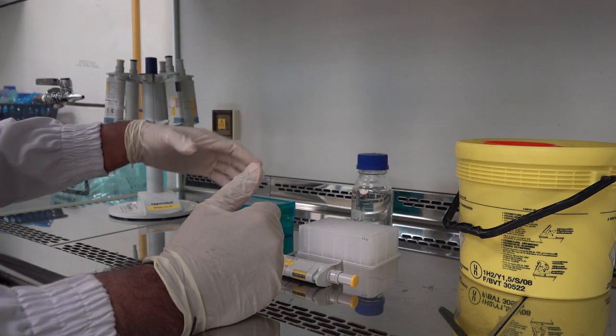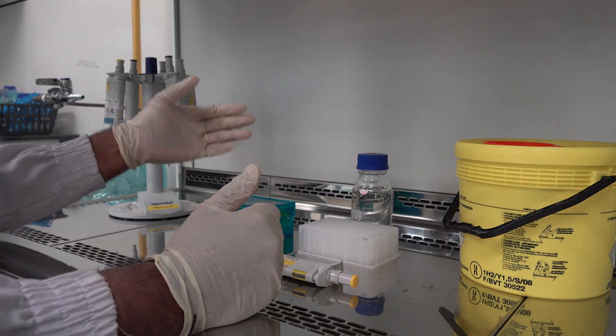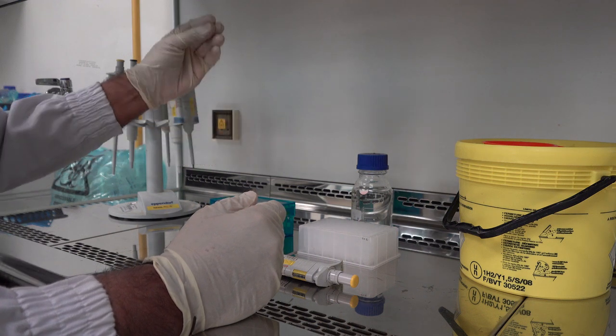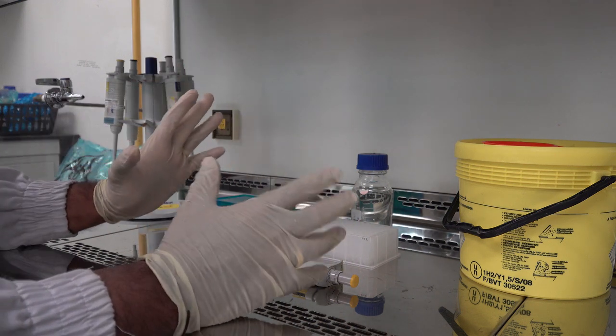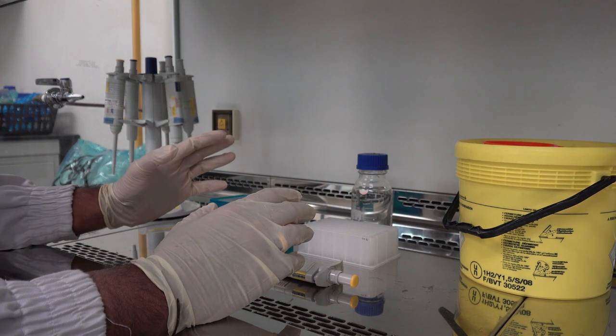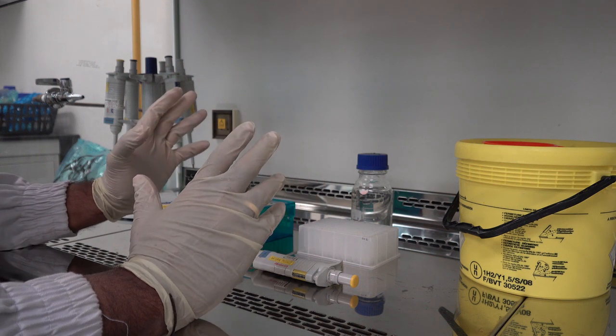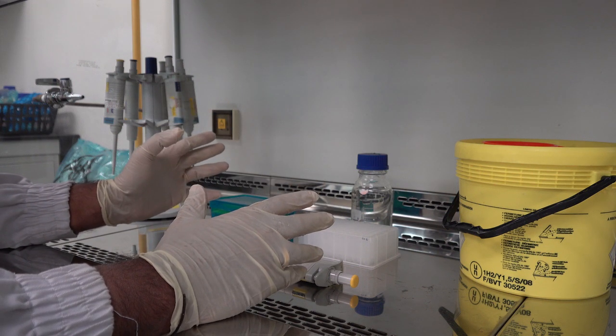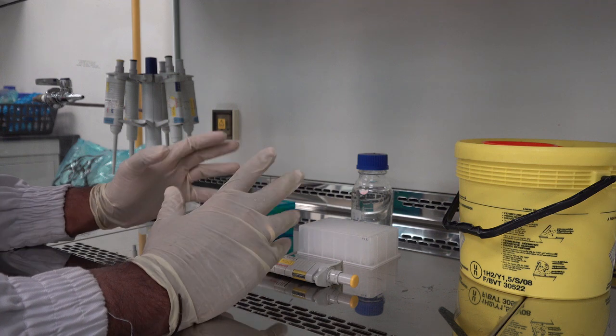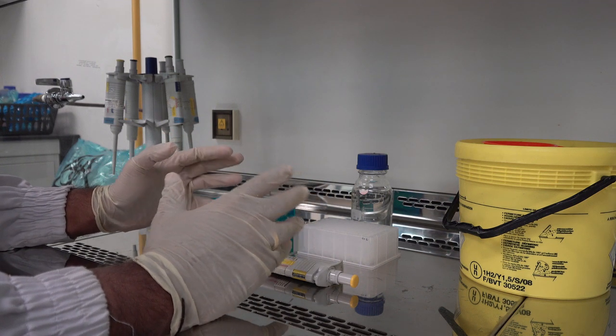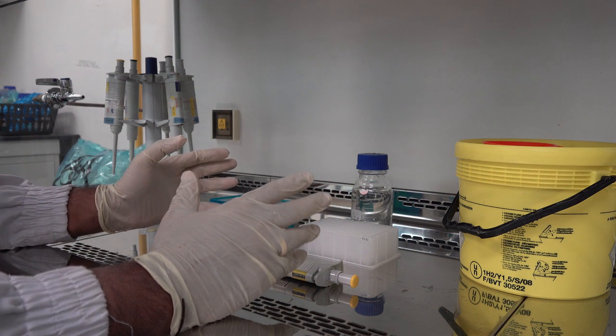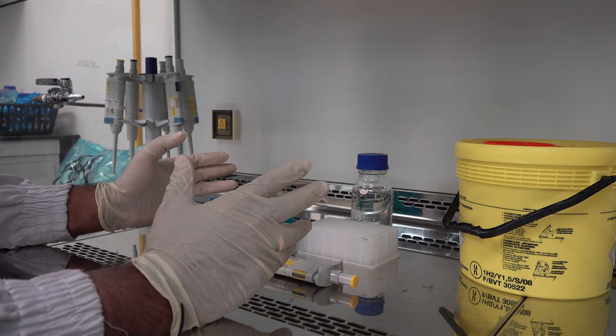There are some things which you cannot do in a biological safety cabinet. For example, the usage of open flames is not permitted as the flame will generate a convection current which can disturb the flow of air in this biological safety cabinet. The second thing which you cannot do is operate centrifuges in this environment, as centrifuges have their own specific air flow patterns generated by their cooling motors and this can in turn disturb the air flow. These are some of the precautions which you need to take into consideration when working in a biological safety cabinet.